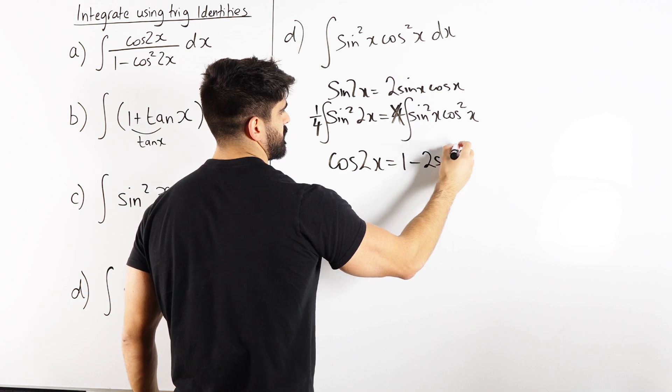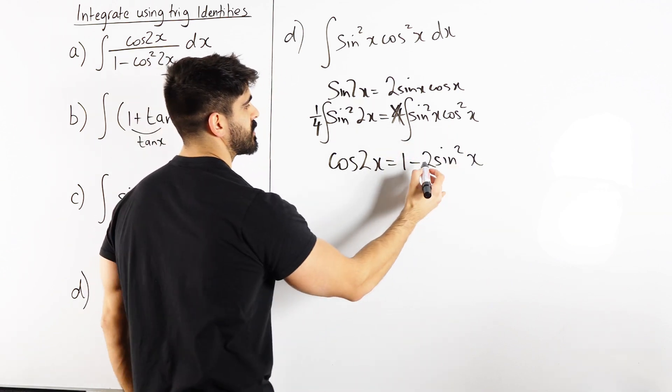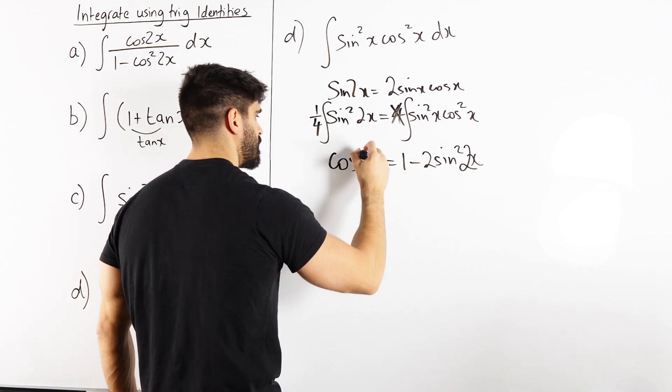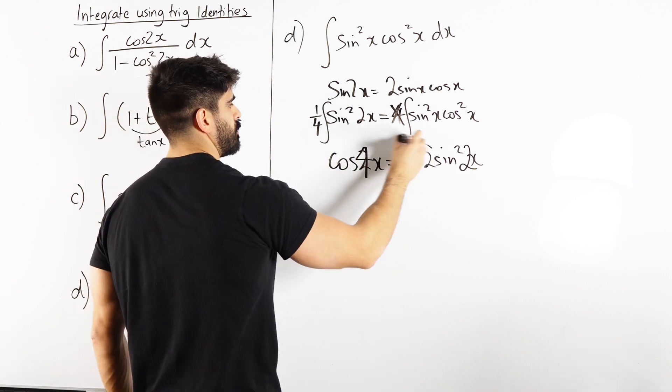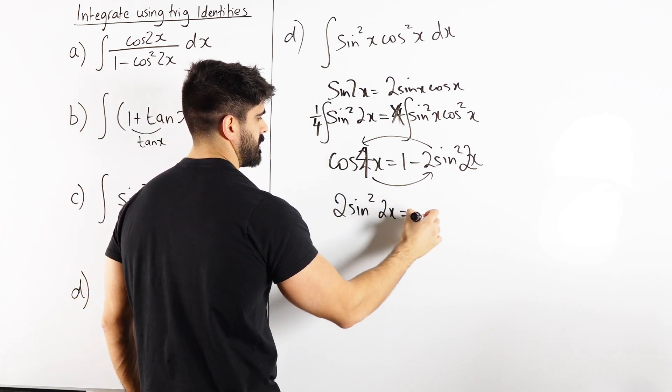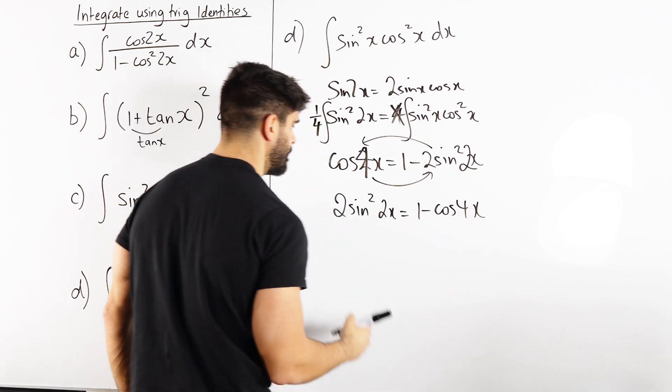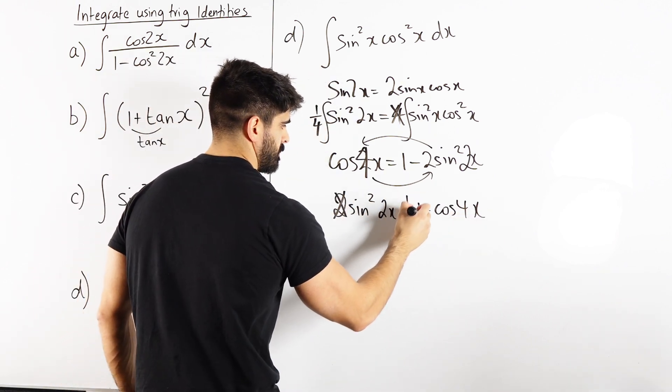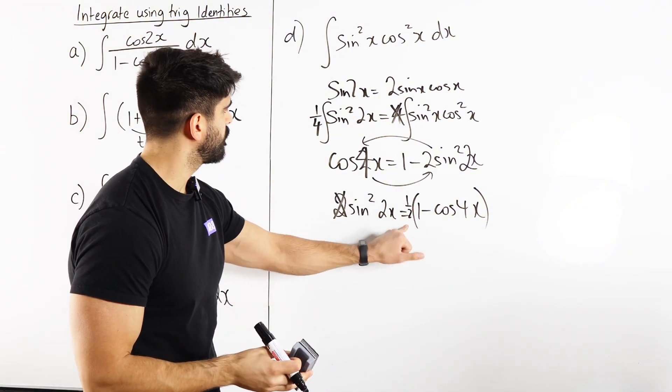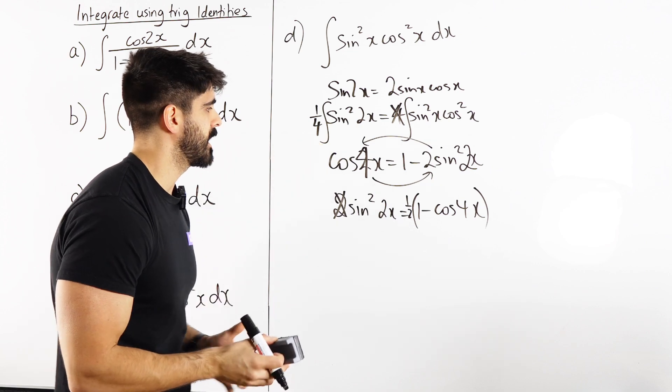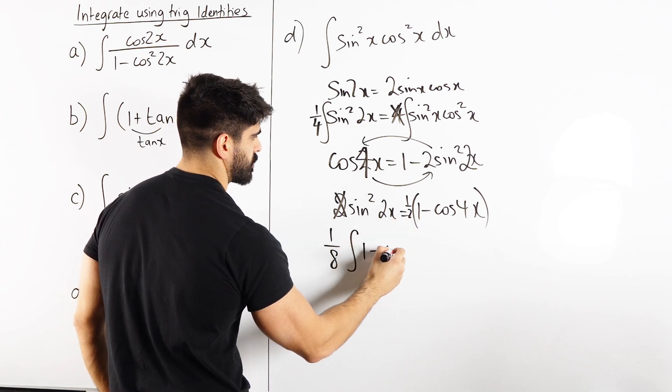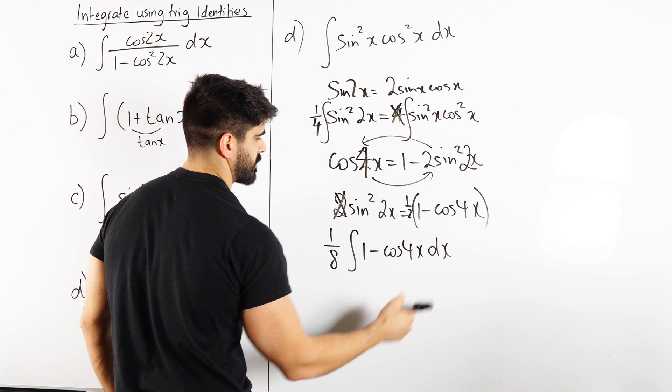So cos, we did this before, is 1 minus 2 sine squared x. But what happens when it's sine squared 2x? Remember, this angle is double this one, so it becomes cos 4x. Bring that here, bring that here, so we get 2 sine squared 2x is 1 minus cos 4x. And then we half both sides. Because when we then take this and plug it into here, that half can combine with the quarter to make 1/8. So we can actually integrate 1/8 of 1 minus cos 4x dx.